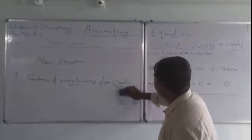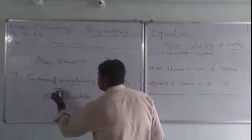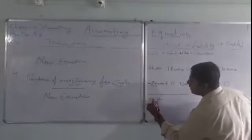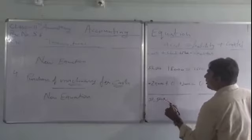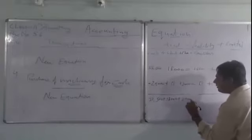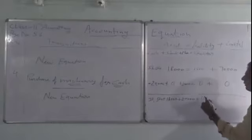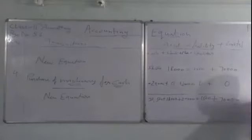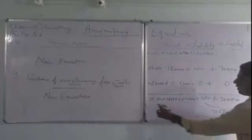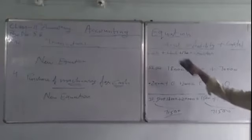New equation: cash fifty-two thousand five hundred minus twenty thousand equals thirty-two thousand five hundred, plus stock eighteen thousand, plus machinery twenty thousand. Creditors five hundred, capital seventy thousand. Total assets: thirty-two thousand five hundred plus eighteen thousand plus twenty thousand equals seventy thousand five hundred. Liabilities plus capital: five hundred plus seventy thousand equals seventy thousand five hundred. Both sides balance — asset equals liability plus capital, the accounting equation is formed.